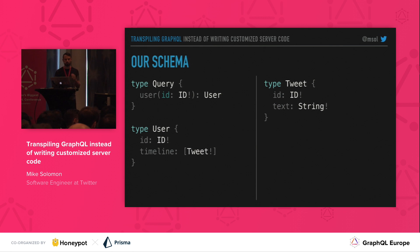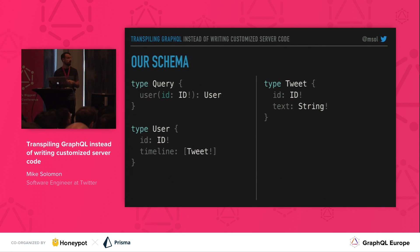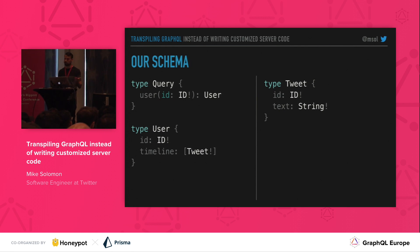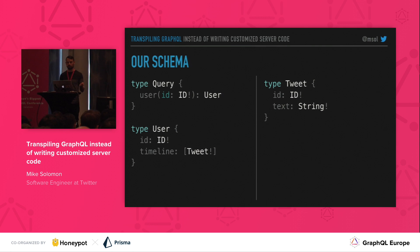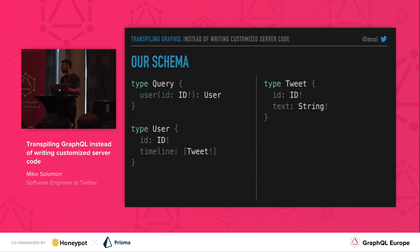Here's our schema. We've got a Query — this is GraphQL's top-level query object — and we can ask for a user by ID and get back a user. Looking at the user itself, we've really trimmed it down: all we get back is that same ID and also a timeline. This timeline is a list of tweets. And tweets are also really slimmed down — just an ID field and a text string.